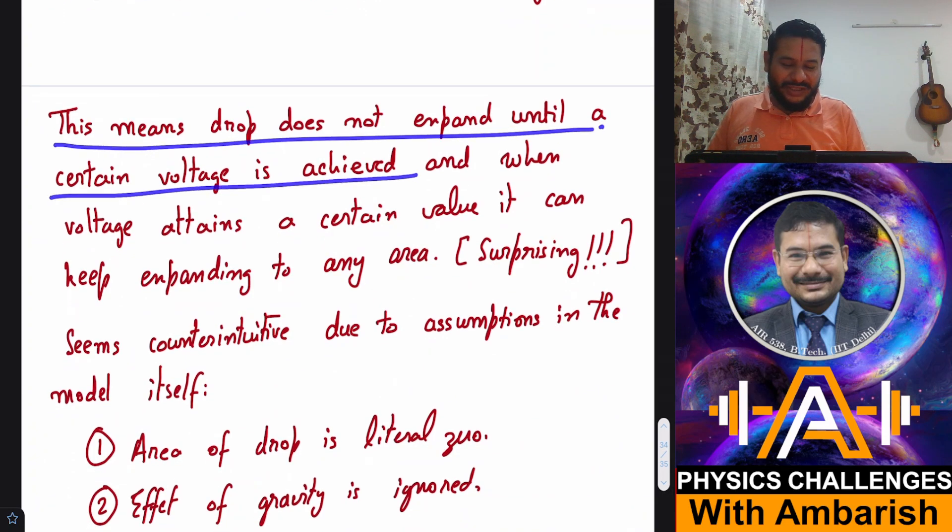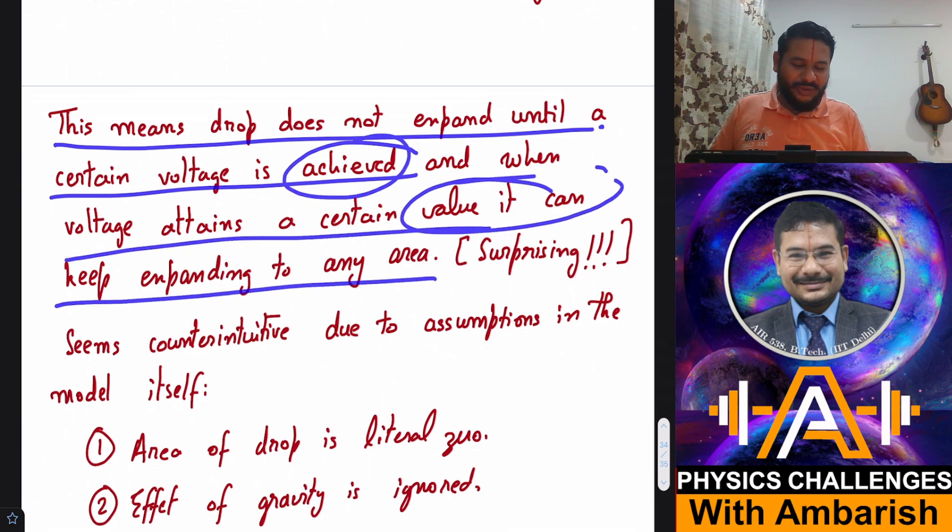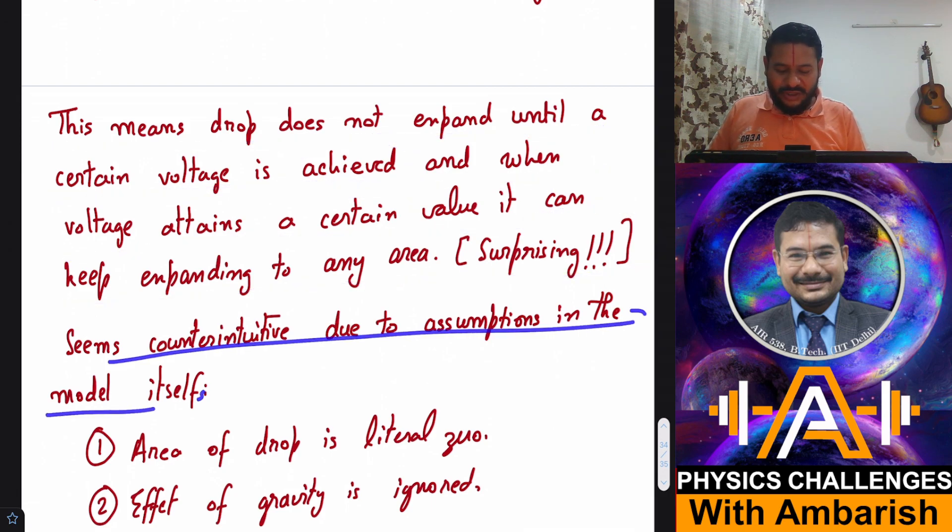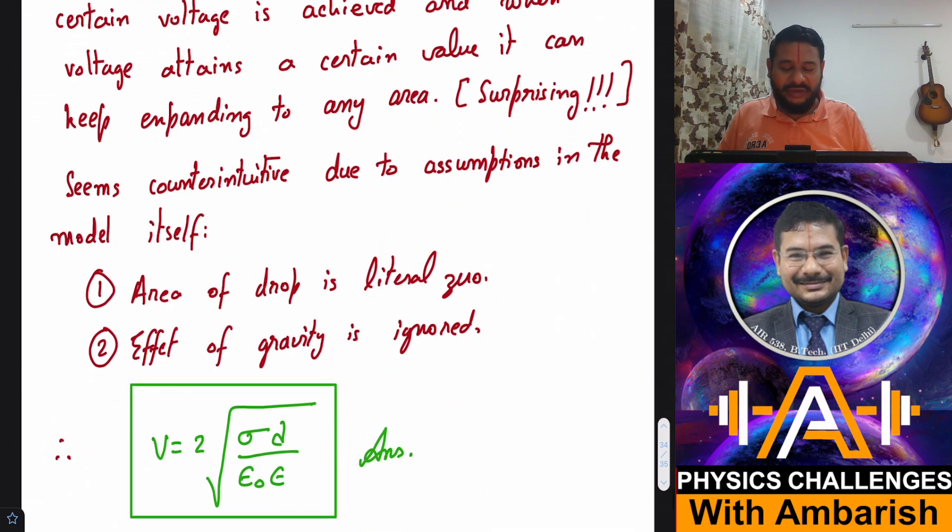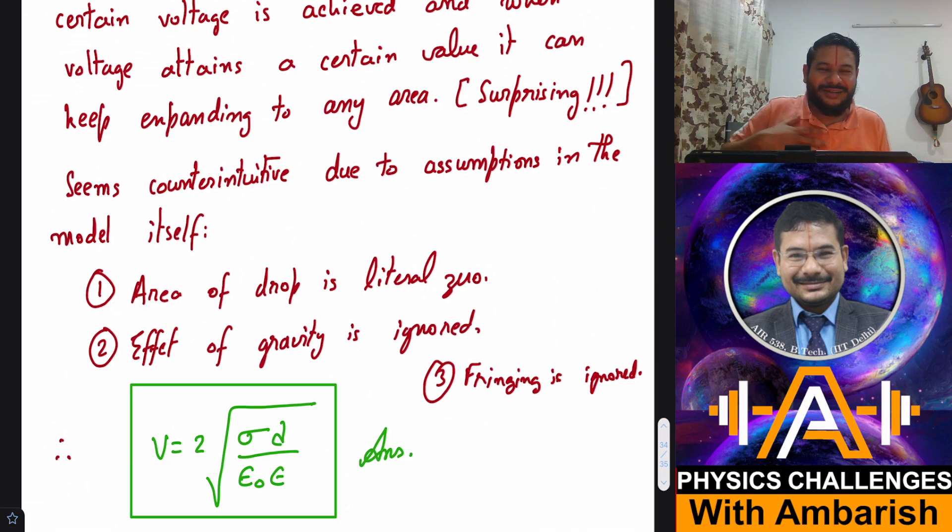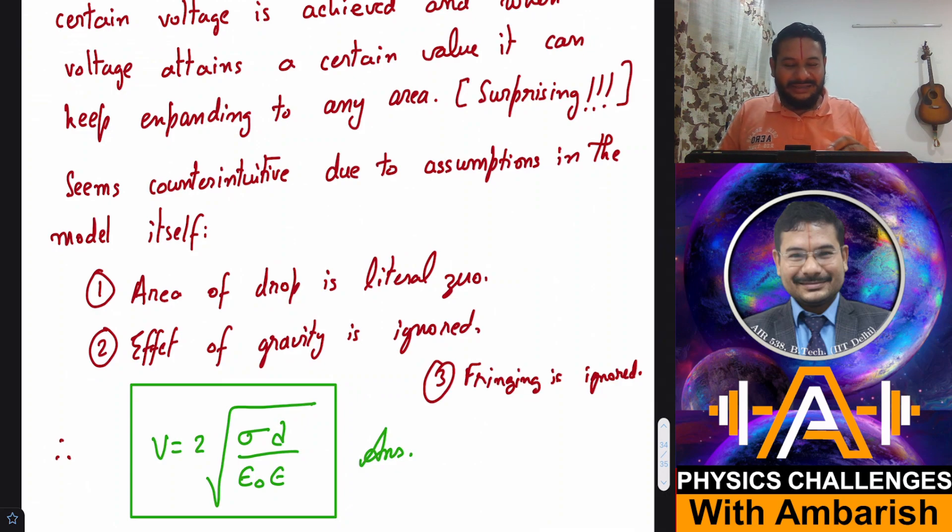By the way, this means that drop does not expand until a certain voltage is achieved. And when voltage attains a certain value, it can keep expanding to any area. This is surprising. This seems counterintuitive due to assumptions in the model itself. So what are the assumptions that we have taken? The first assumption is we have taken that the area of the drop is literally zero. But when you put the drop on the surface, it will have some finite area. And accordingly, the solution changes, then you no more have a sudden expansion. If you take that into account. And then we have also ignored the effect of gravity. And plus the third thing is we have also ignored the effect of fringing. Fringing is ignored. So all these things we have not considered while making the model. And that's why it's okay. You can have some satisfaction in your heart that, okay, no problem. These are the assumptions and that's why we are getting this result. And this is the final answer that we get.